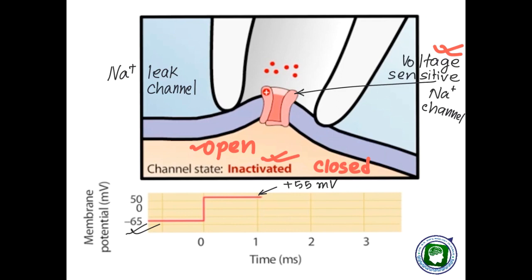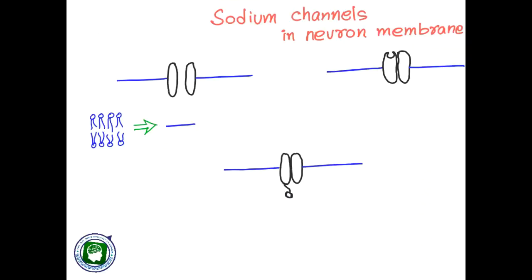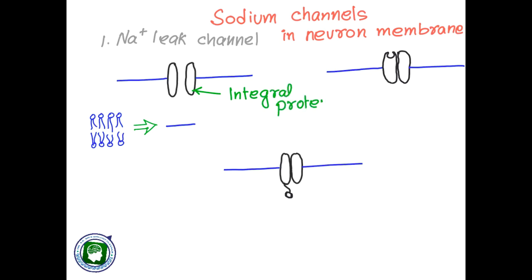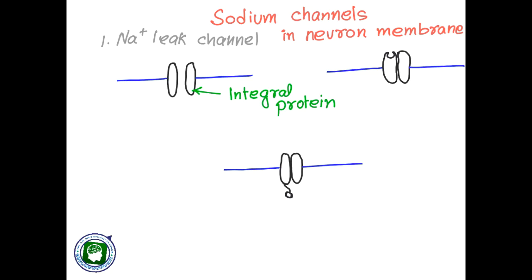Now let's look at the working principle of different types of ion channels. First, the sodium leak channel — this integral protein forms the channel and the plasma membrane is represented by the phospholipid bilayer. Leak channels are always open and freely permeable to ions. If there is more sodium outside, sodium can freely enter into the cell, and if there is more sodium inside, sodium will freely leave the cell through these leak channels.